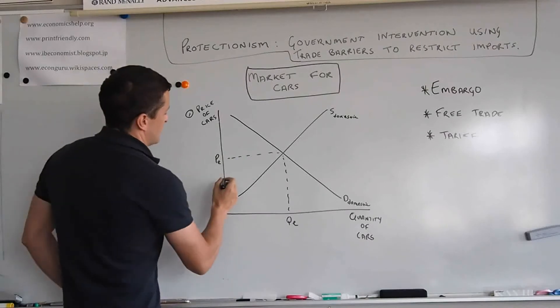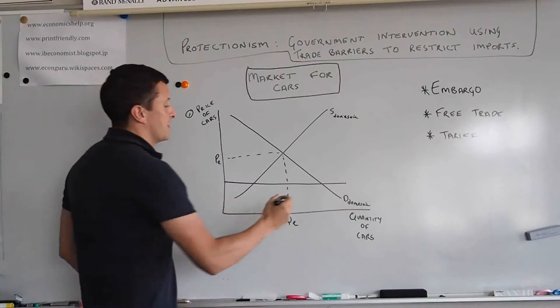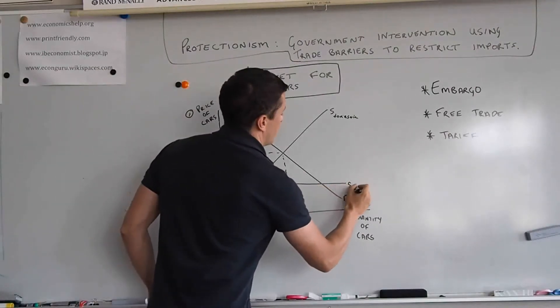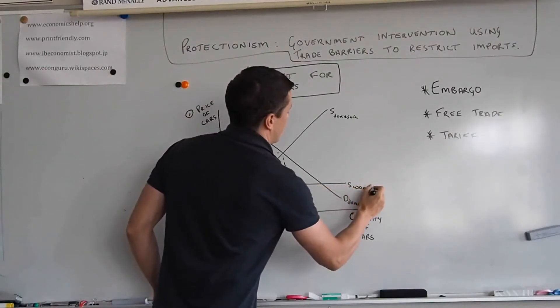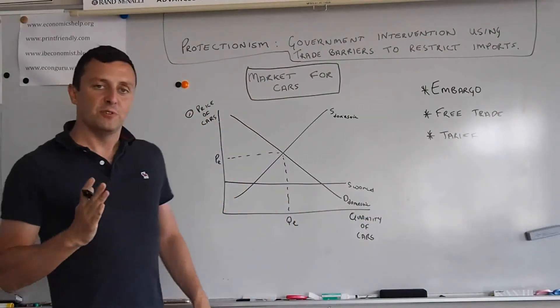Enter supply world. Now we label this with S world. Why is the line horizontal you ask?